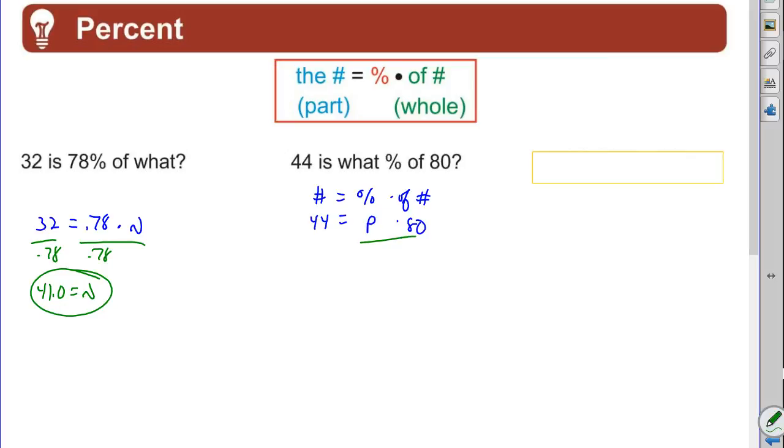Again, the 80 is multiplied times a variable. We can simply divide both sides by that 80 to move it, right. Very simplistic. Now don't forget, if you want to read the percent off of your calculator...